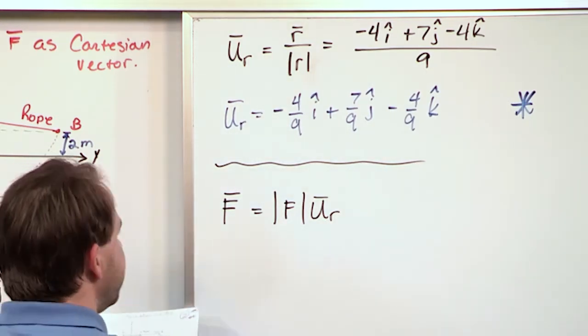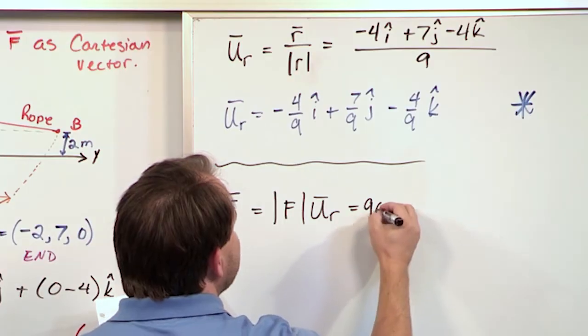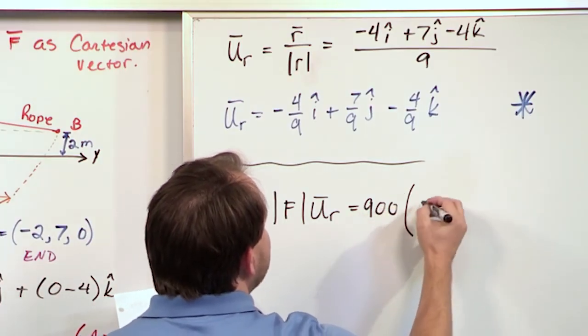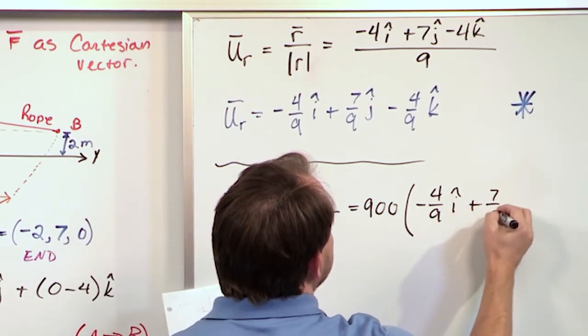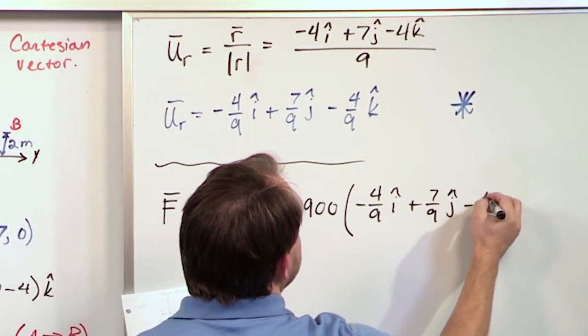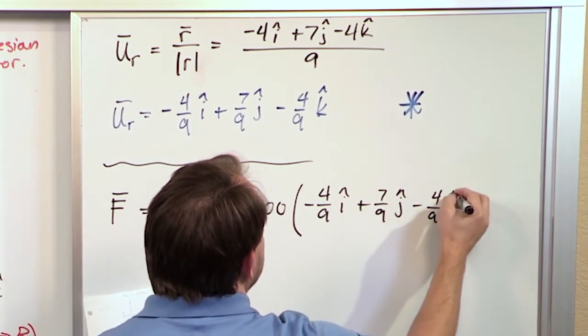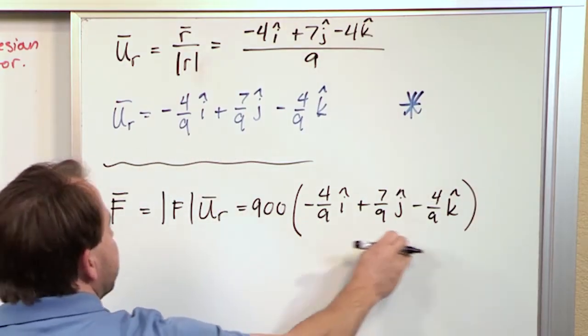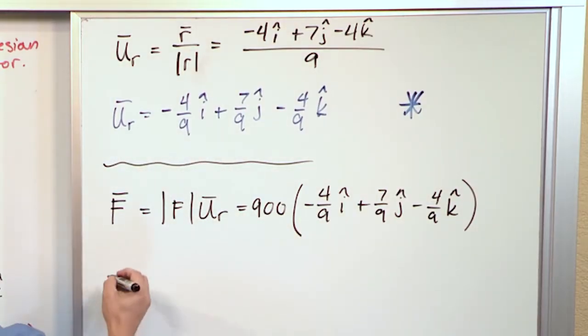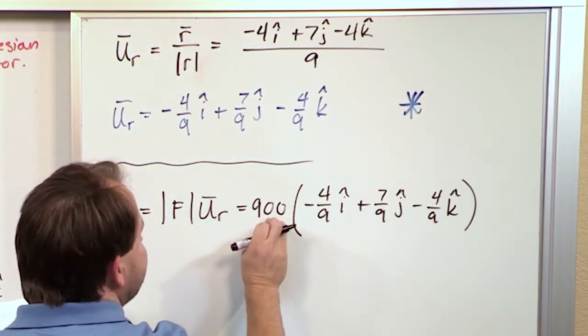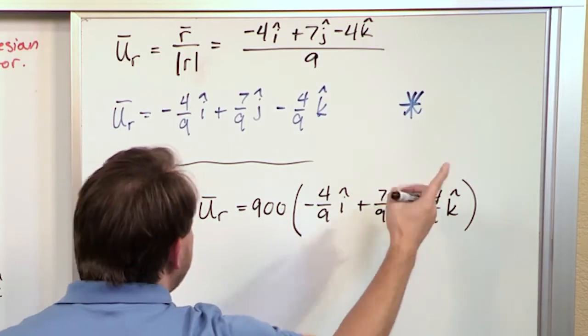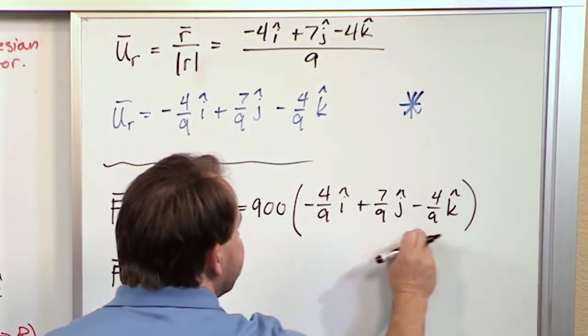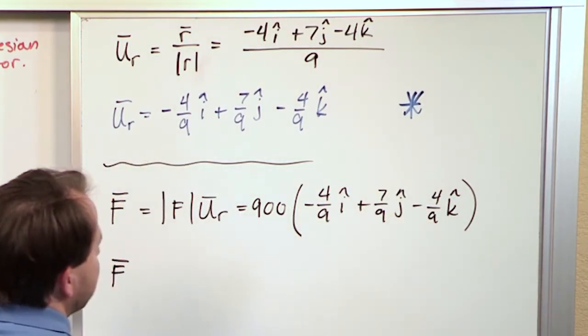So, in our case, we're pulling with 900 newtons and inside here I have negative 4 ninths i direction plus 7 ninths in the j direction minus 4 ninths in the k direction. So, this is the vector, the unit vector, this is how much I'm pulling with. And so, finally, at the end of the day, this can be distributed, this 900 can be multiplied into term by term, just like regular algebra. Even though this is a vector, it still gets distributed just like regular algebra.